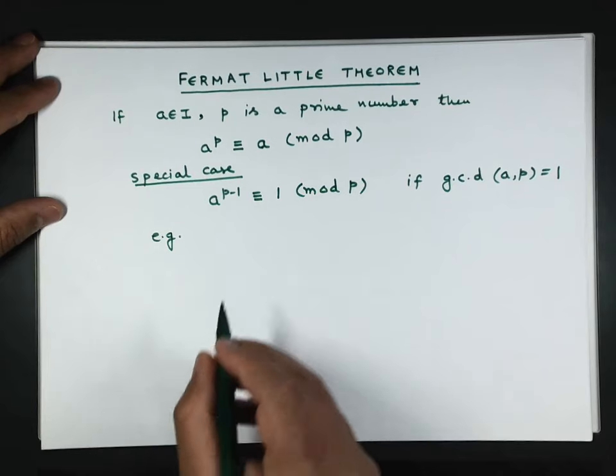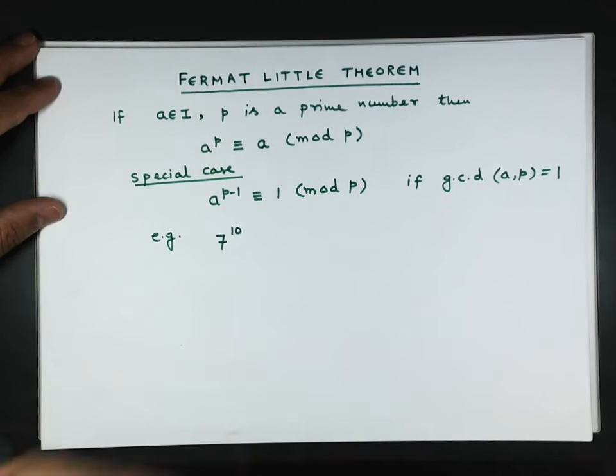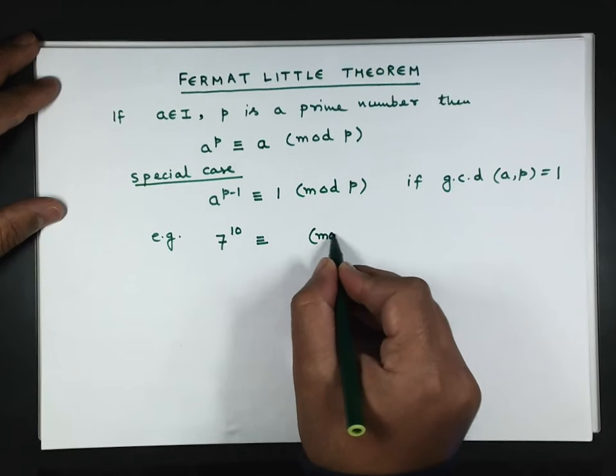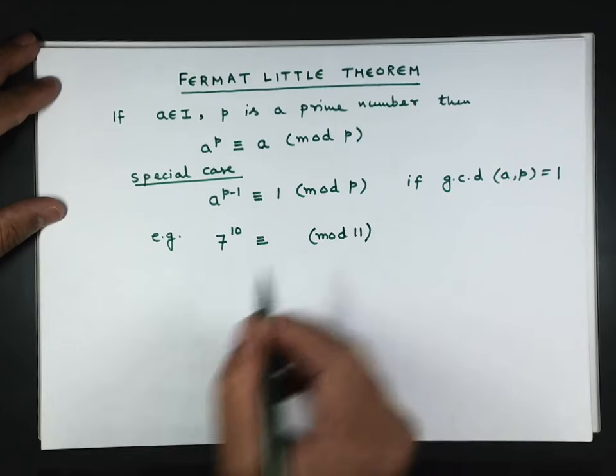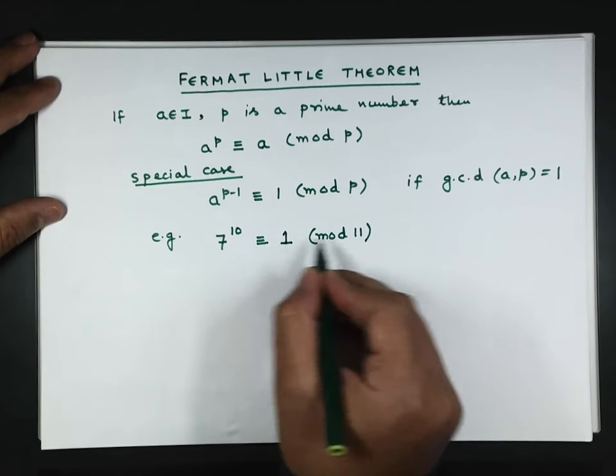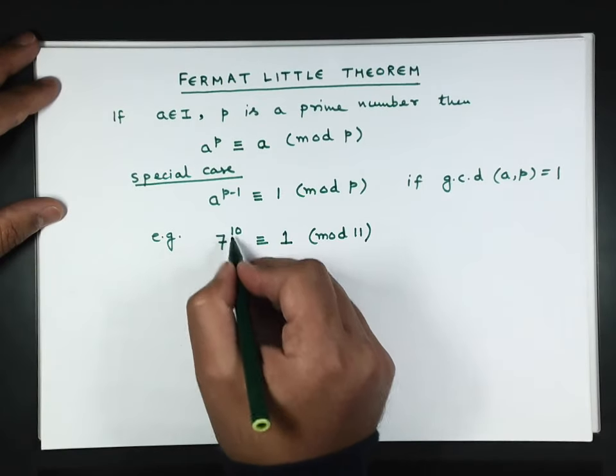For example, if you take 7^10 modulo 11, this will give 1 because 11 is a prime number and 10 is p-1.